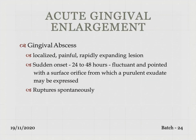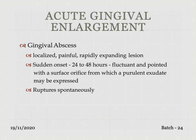The next is acute type of inflammatory gingival enlargement. An example is gingival abscess — a localized, painful and rapidly expanding lesion with sudden onset of less than 48 hours. It is fluctuant and pointed with a surface orifice from which purulent exudate may be expressed, and it ruptures spontaneously. It is caused by a local factor or external factor like a fish bone injury. Once stuck on the gingival margin, inflammatory reaction occurs; unless the local factor is removed, pus formation results in localized gingival enlargement.